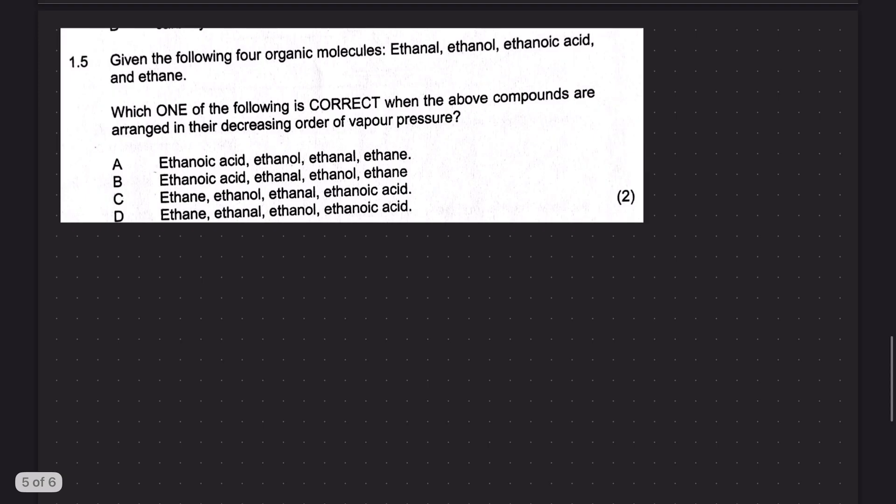Question 1.5. Given the following four organic molecules, ethanol. So ethanol is an aldehyde because it ends in L. So aldehyde. Ethanol, which is an alcohol. Ethanoic acid, which is a carboxylic acid. And ethane, which is an alkane. They want to know which one of the following is correct when above compounds are arranged in decreasing vapor pressure.